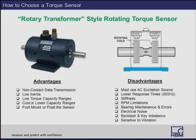A step up from the slip ring sensor is the rotary transformer type — mechanically the same but using rotary transformers instead of slip rings and brushes. One transformer excites the torque sensor; a second takes the data back. It shares most of the same advantages and disadvantages, except there is no brush maintenance. Because it is non-contact, the torque sensor can generally spin at a higher rate. Disadvantages include lower response times — generally around 300 Hz of frequency response — and because of the gap between the rotary transformers, these sensors are sensitive to vibration and misalignment or thrust forces, which can easily damage them.